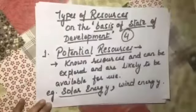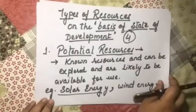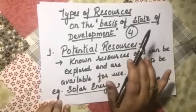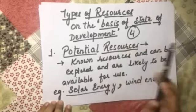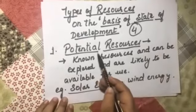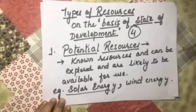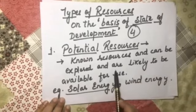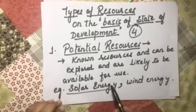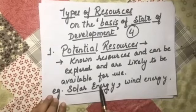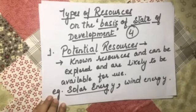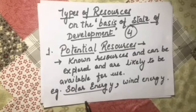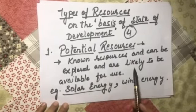Now the types of resources on the basis of state of development — there are four types. The first is potential resource. As the word conveys, potential resources are known resources that can be explored and are likely to be available for use. For example, solar energy was present on Earth since its formation, but scientists came to know its potential only a few decades back. So solar energy and wind energy are examples of potential resources.